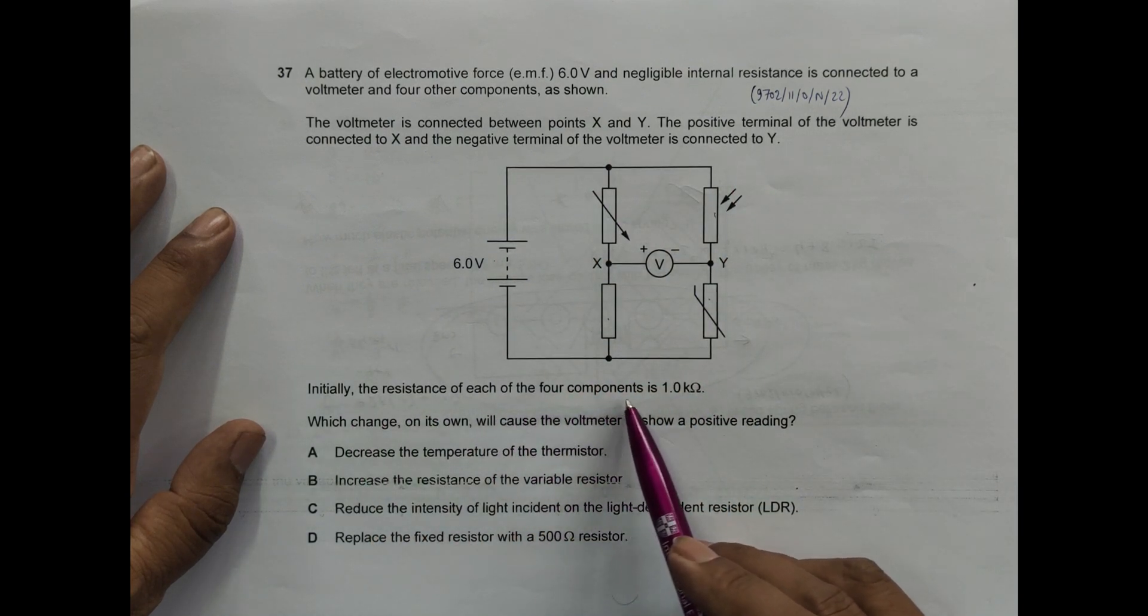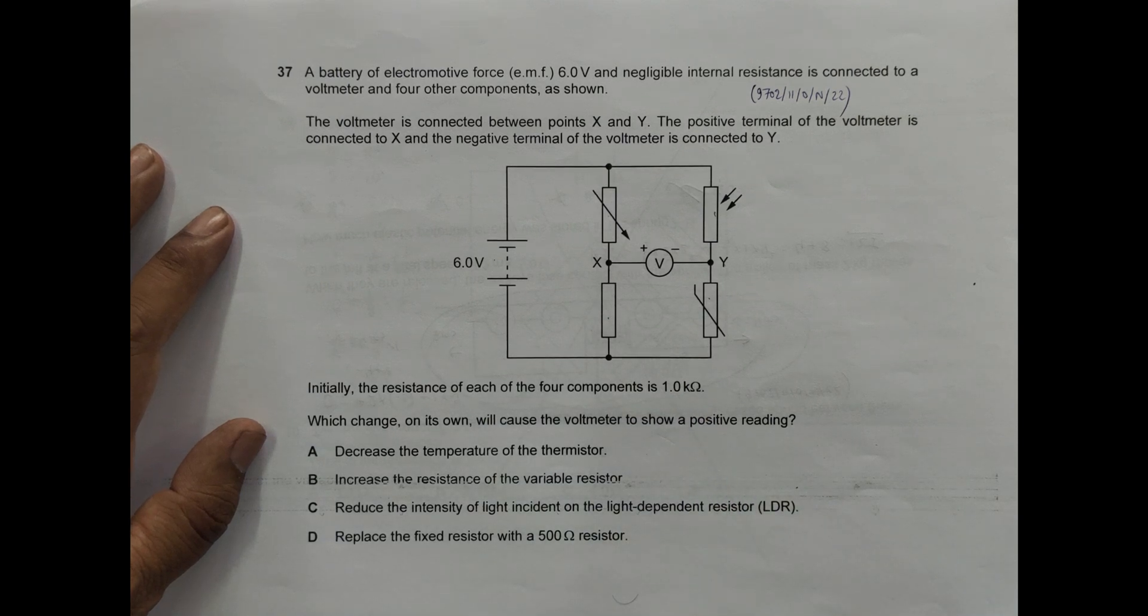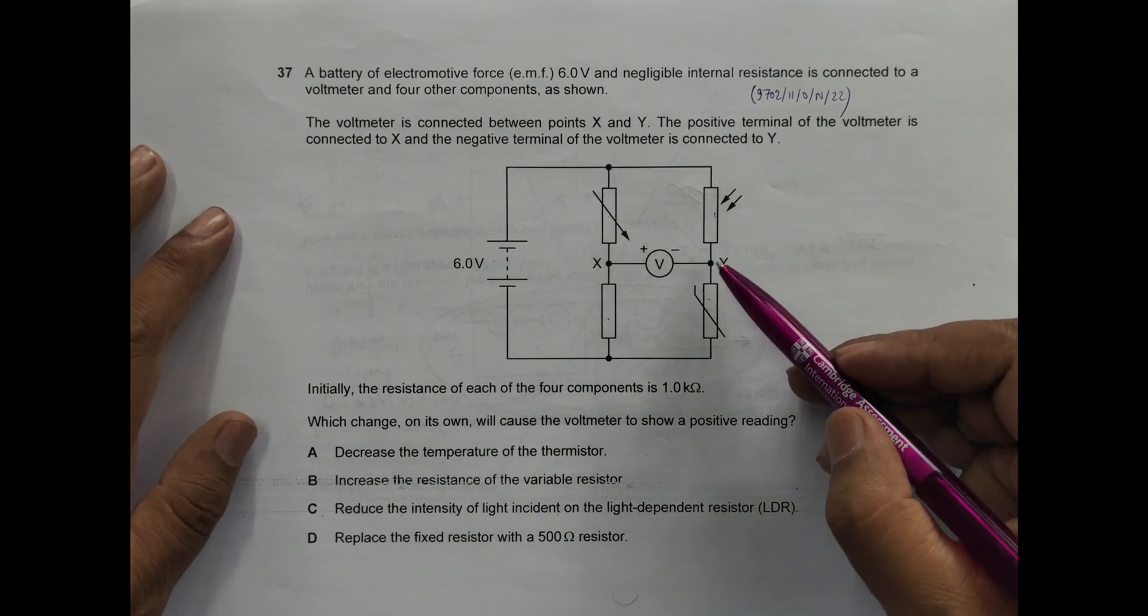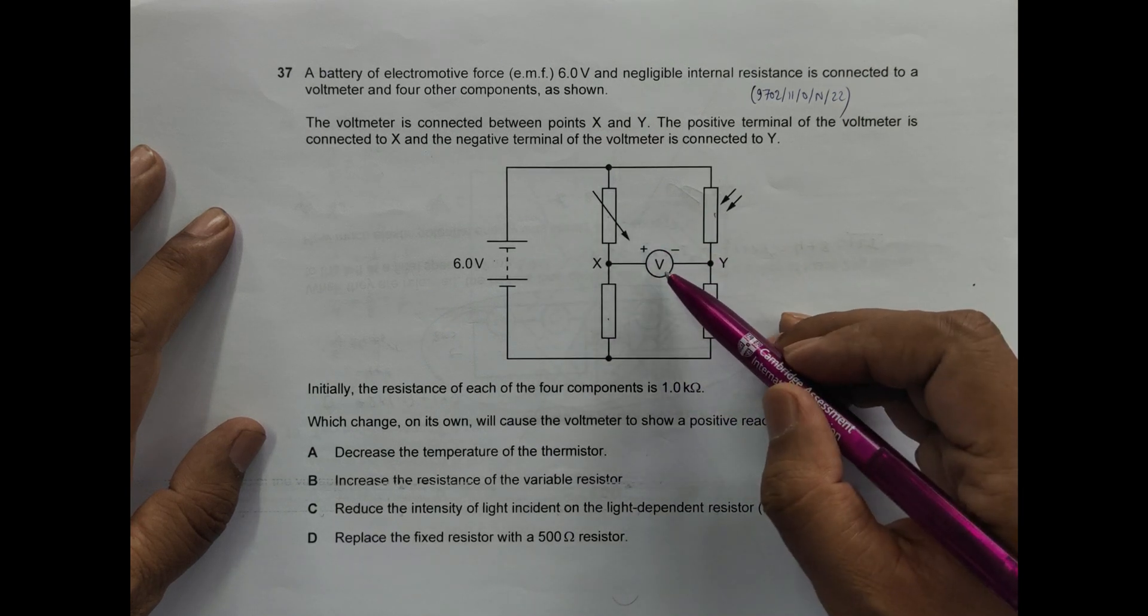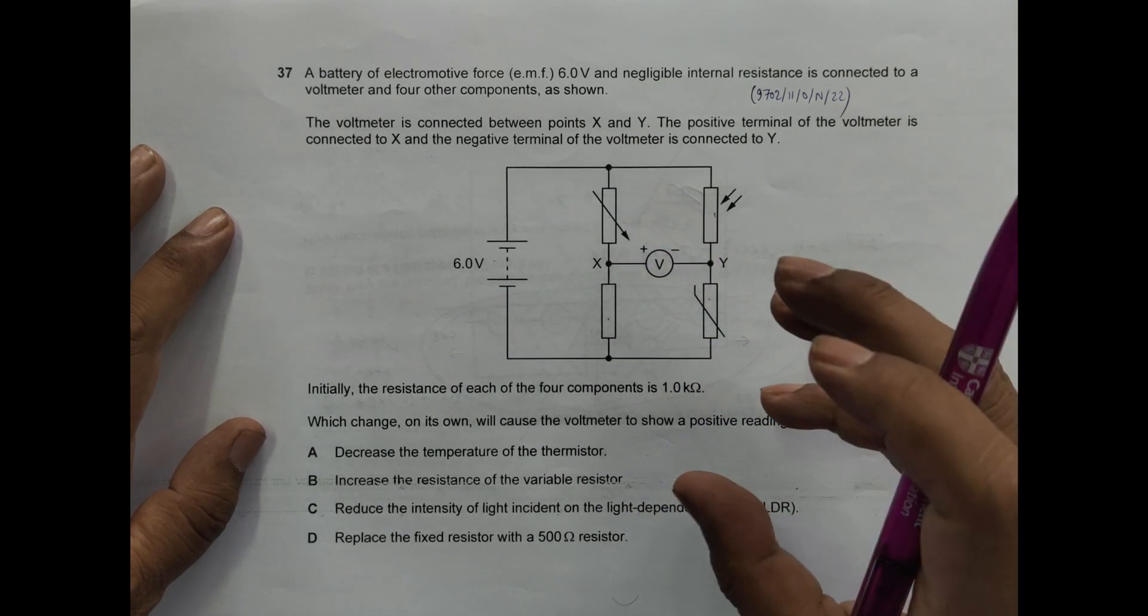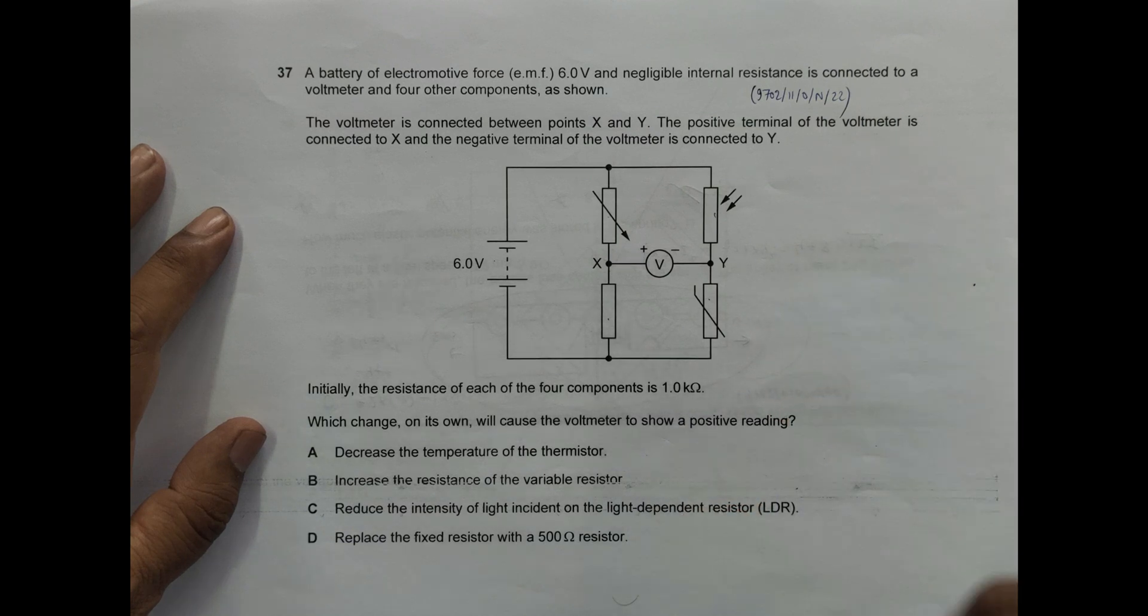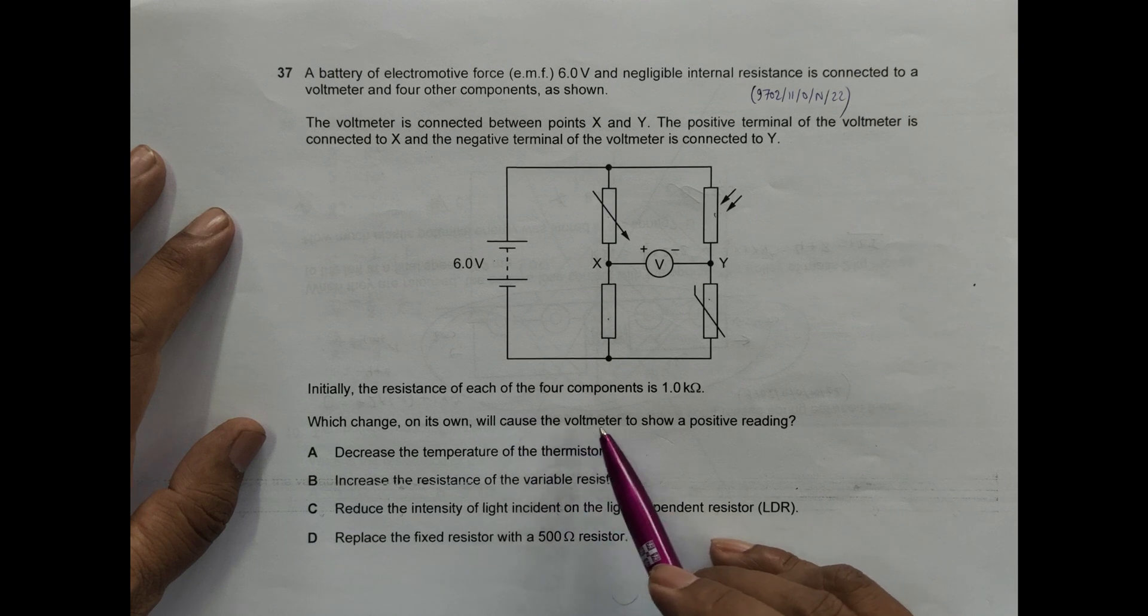So if all resistances are 1-1-1-1, this V should be reading zero at that time. It is a typical Wheatstone bridge principle. Which change on its own will cause the voltmeter to show a positive reading?